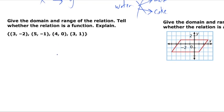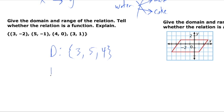Let's look at an example. We want to give the domain and range of a relationship and determine whether or not it is a function. Since these are single points, the domain is going to be a set of numbers because it's discrete — the points don't connect. We have the x values of 3, 5, 4, and then 3 again — but since 3 is already listed, we're done. The range, which is our y values, is negative 2, negative 1, 0, and 1.